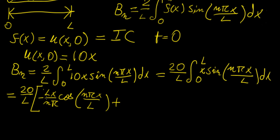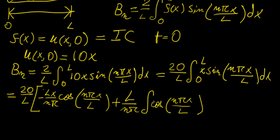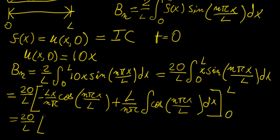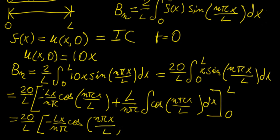This becomes minus lx over nπ times cosine of nπx over l, then the minus is multiplied by this minus, giving plus l over nπ of the integral of cosine(nπx over l). Because the derivative of x is 1, we have 1 times this. All of this is evaluated between the boundaries 0 and l, giving: minus lx over nπ times cosine(nπx over l) plus l² over n²π² times sine(nπx over l).